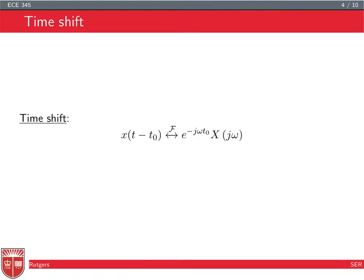The second property is the time shift, which says that the CTFT of x(t - t0) — a shift by t0 — implies a multiplication by e^(-j*omega*t0) in the Fourier domain. You can think of t0 as a delay; for example, x(t) could be the signal you transmit on an antenna on a cell tower, and what you receive is going to be a delayed version of that signal plus some noise.